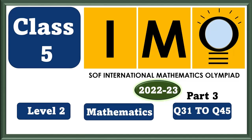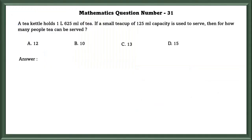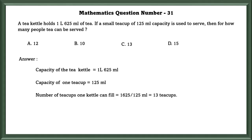Class 5 IMO Level 2 Mathematics. Mathematics question number 31. A kettle holds 1 liter 625 ml of tea. If a small cup of 125 ml capacity is used to serve, then for how many people can the tea be served? To find this, we divide the capacity of the tea kettle by the capacity of one tea cup. We get 13 tea cups. Therefore, one kettle of capacity 1 liter 625 ml can serve 13 people.